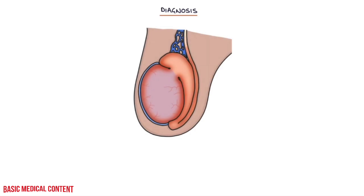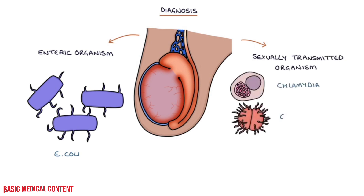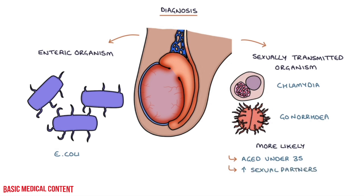Let's talk about making the diagnosis. The key with epididymo-orchitis is to distinguish whether the cause is likely to be an enteric organism, such as E. coli, or a sexually transmitted organism, such as chlamydia or gonorrhea. The features that make sexually transmitted organisms more likely, as per the NICE clinical knowledge summaries from 2020, are aged under 35, an increased number of sexual partners in the past 12 months, and discharge from the urethra.